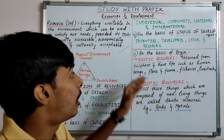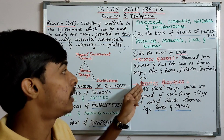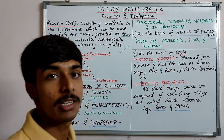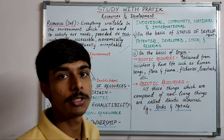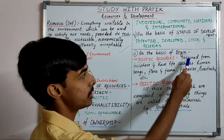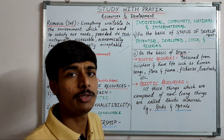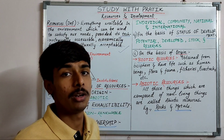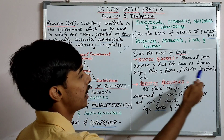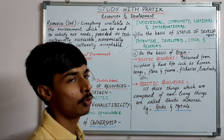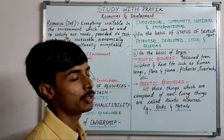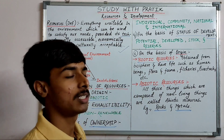Now let's discuss in detail about biotic and abiotic resources — how resources are divided on the basis of origin. Biotic resources are all resources which we obtain from the biosphere, which consists of living organisms. Examples include human beings, flora and fauna, fisheries, and livestock.